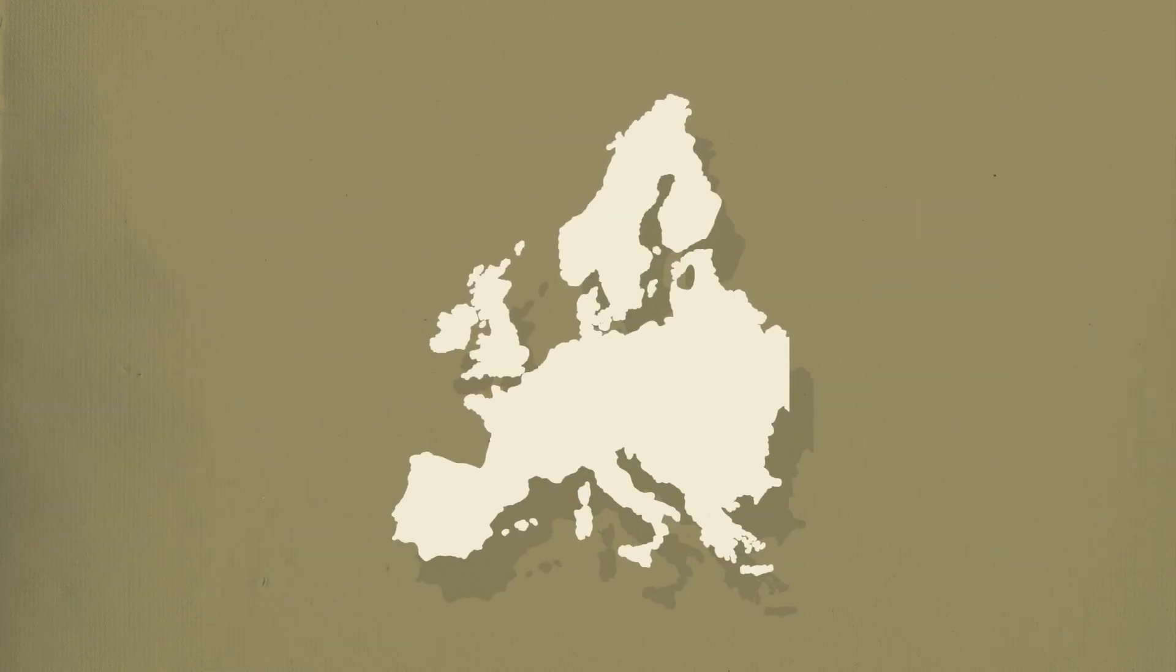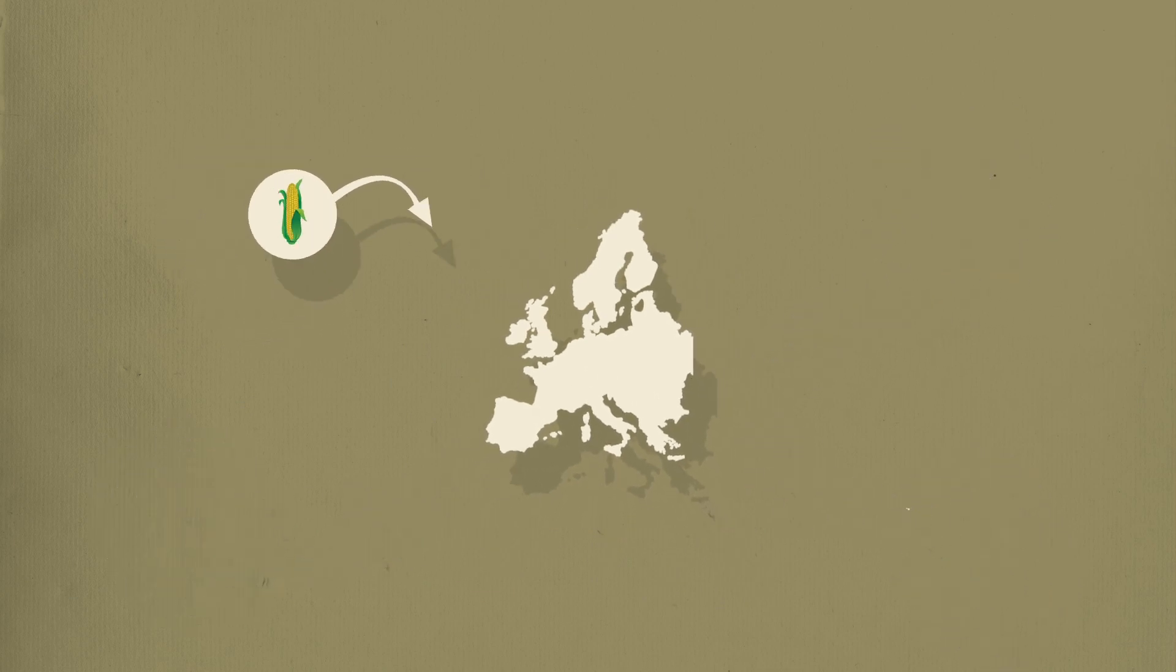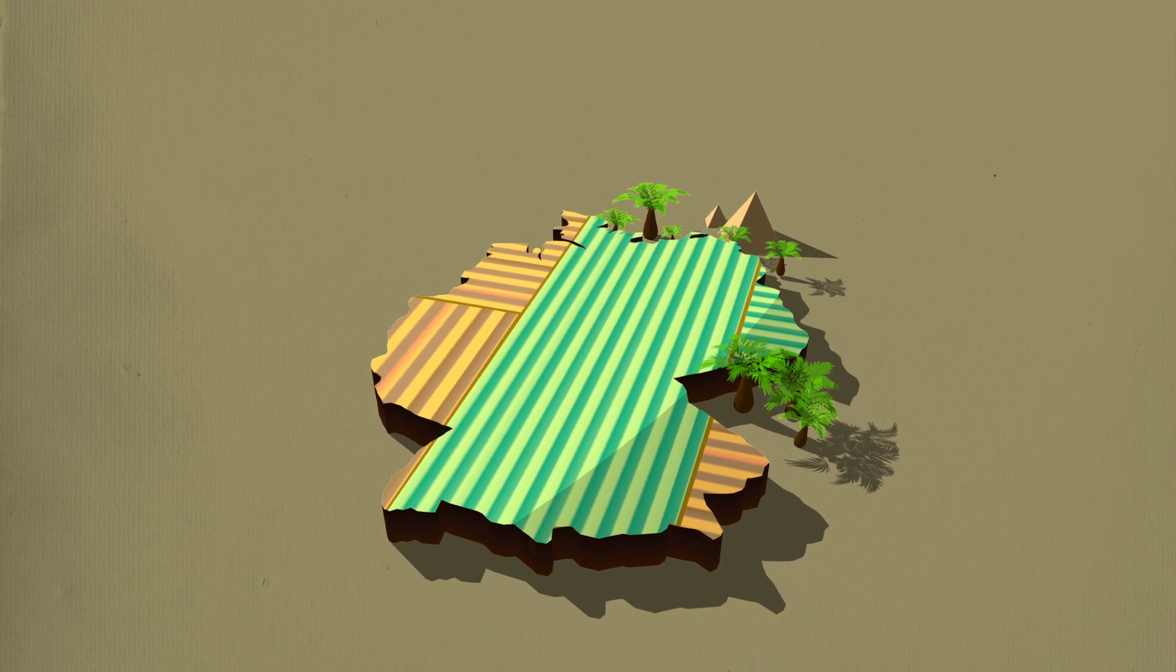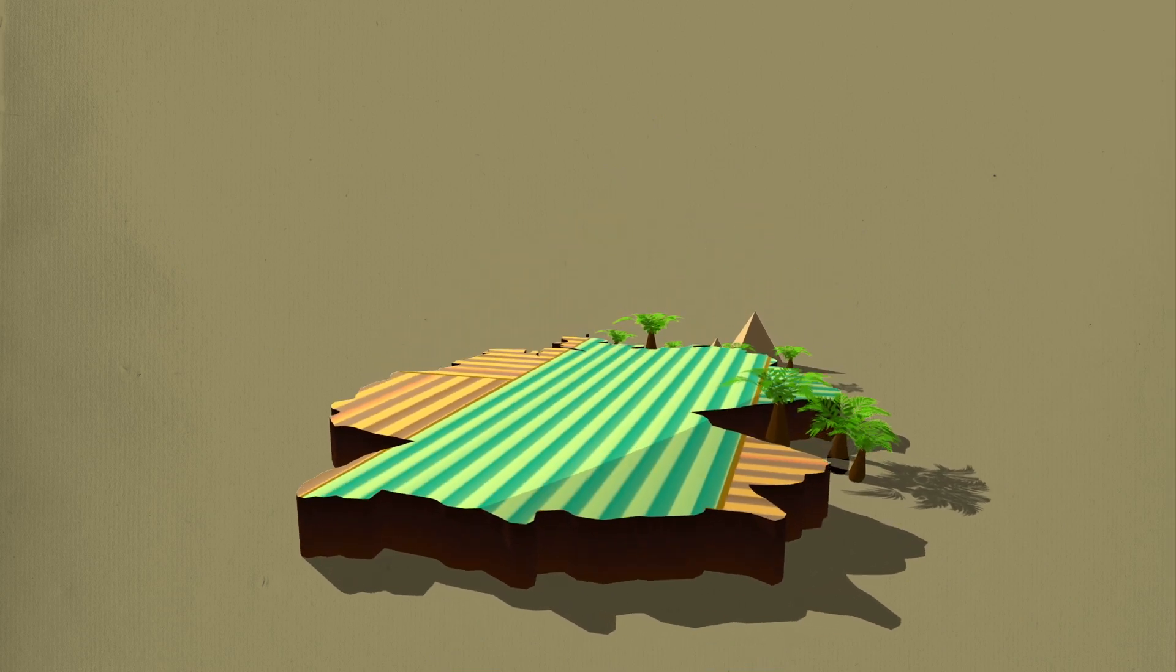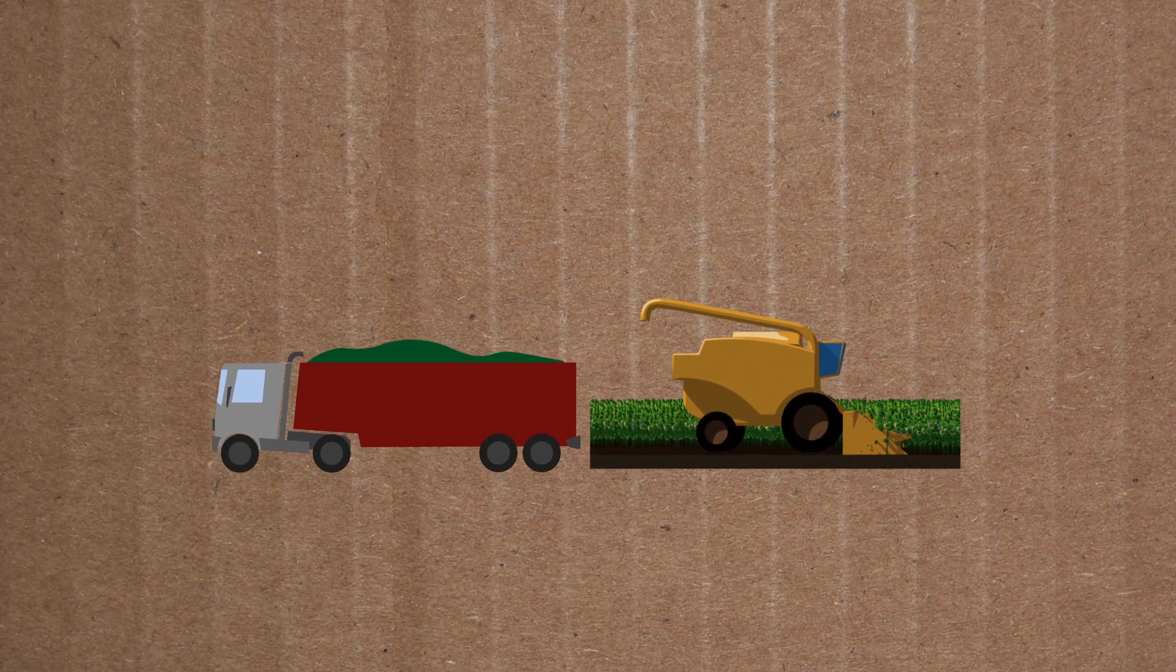In Europe we rely on other countries to grow a lot of our food. The developing world already devotes an area of farmland the same size as Germany to grow our food. But our land is already producing as much as it can, so we must import all this food to feed everyone.